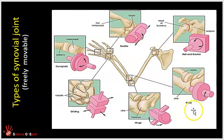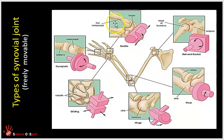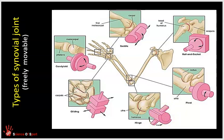We've got condyloid, saddle, ball and socket, pivot, hinge, and gliding. This diagram is quite useful because it gives a vaguely anatomical example but also a diagrammatic interpretation of the joint structure, showing how different joints are structured in different ways to enable them to work differently. Remember from the previous video that all of these joints have similar characteristics: a joint capsule, synovial membrane, synovial fluid, ligaments stabilizing the joint, and tendons and muscles working over the joints.